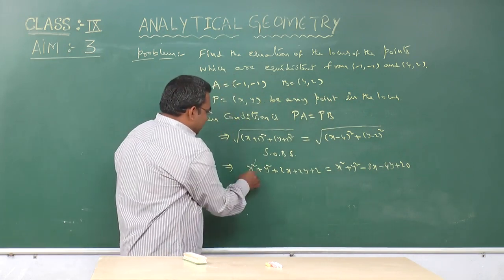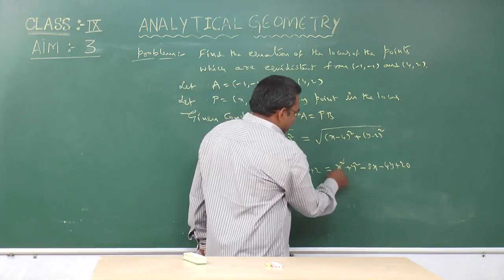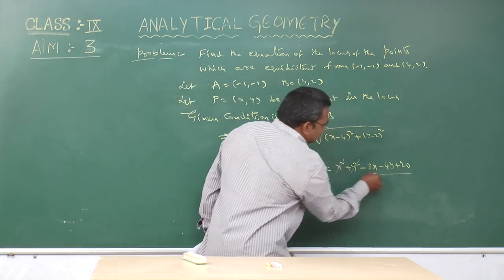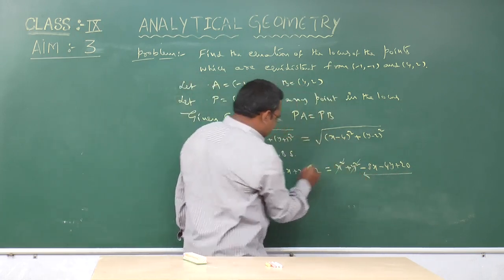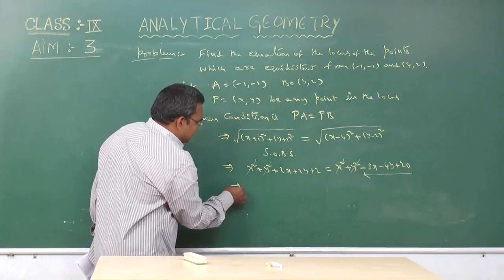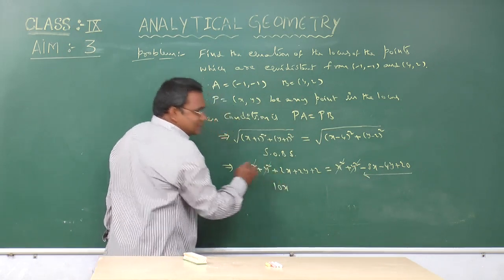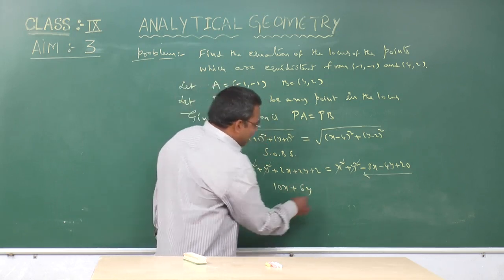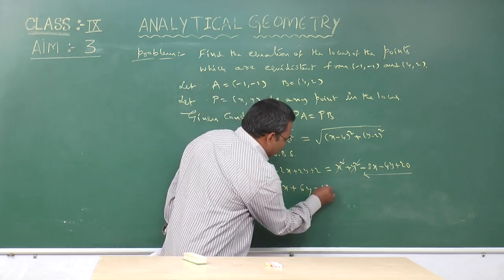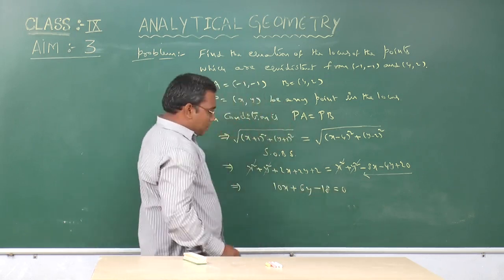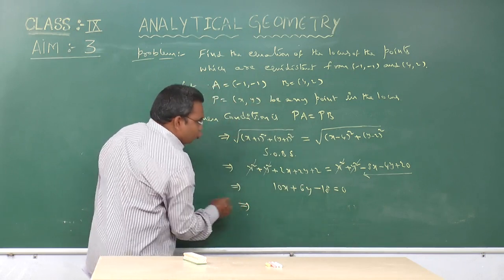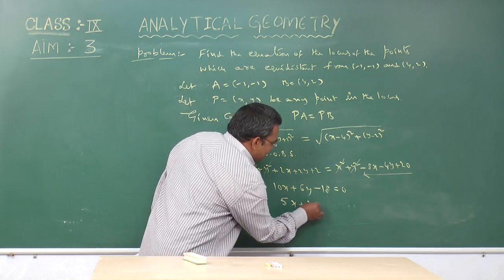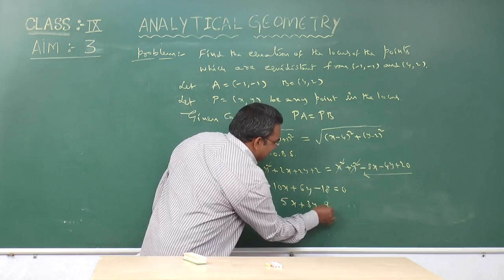Both sides x² plus y² are cancelled. By simplification we get 10x + 6y - 18 equals 0. By dividing by 2, we get 5x + 3y - 9 equals 0.